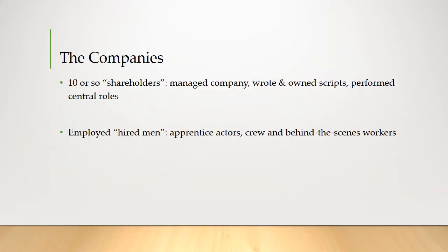How were the companies organized? Generally there were 10 or so shareholders — these were the people who essentially owned and ran the acting company, managed it, and wrote and owned the scripts. Shakespeare was a shareholder; he would write scripts that he would then sell to his own company, and the company itself would own the scripts. These shareholders were also usually actors who would take the key roles. They also employed a number of hired men — both the apprentice actors who would do minor roles, as well as their crew: people who helped with makeup and costumes, who handled props, special effects, and all the behind-the-scenes workers.